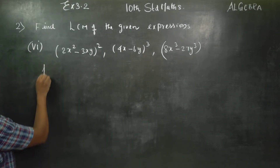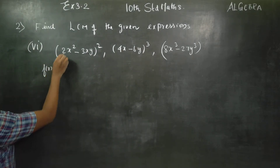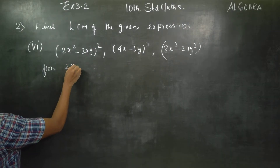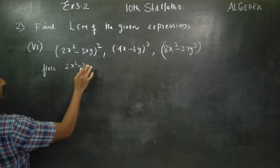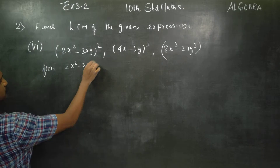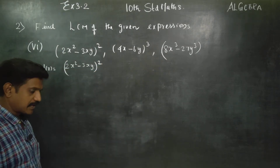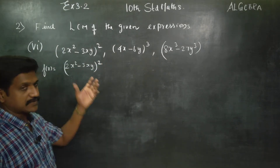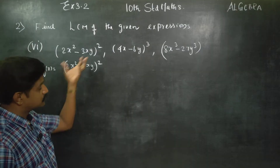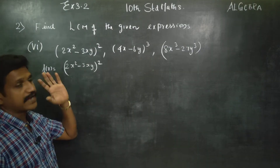First of all, I start with f of x. f of x is equal to 2x square minus 3xy, whole square. The whole square is equal to factorize — whole square, whole cube. This is the factorize.